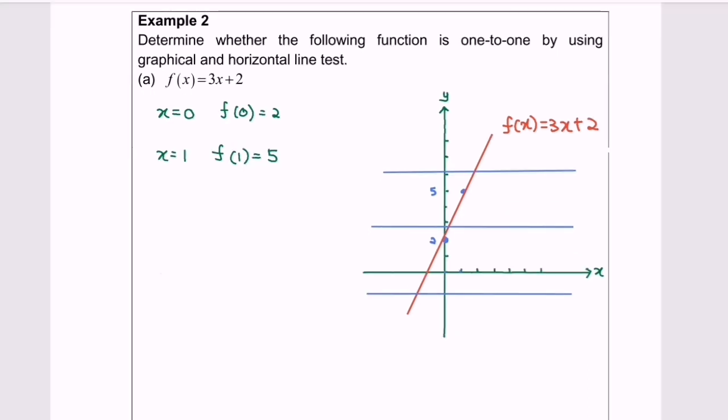Based on the horizontal lines, we can see the intersection points between each horizontal line and the function. Every horizontal line intersects the graph exactly once, so this is a one-to-one function.